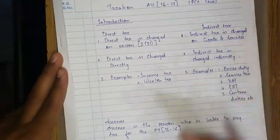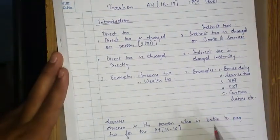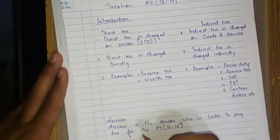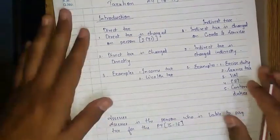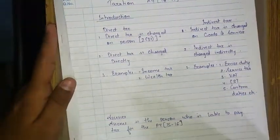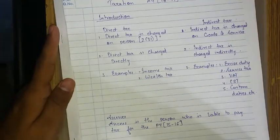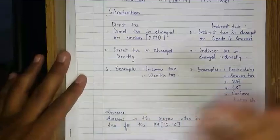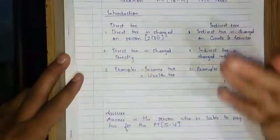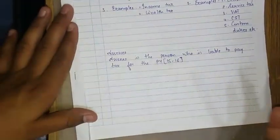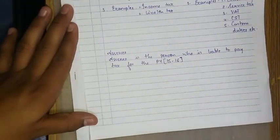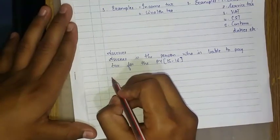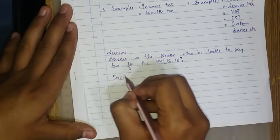This much is enough as an introduction. Let me give you the breakup for the taxation paper. The paper is 416 marks, that means 58 marks for direct tax and 58 marks for indirect tax. Now let's start with the direct tax question paper format.